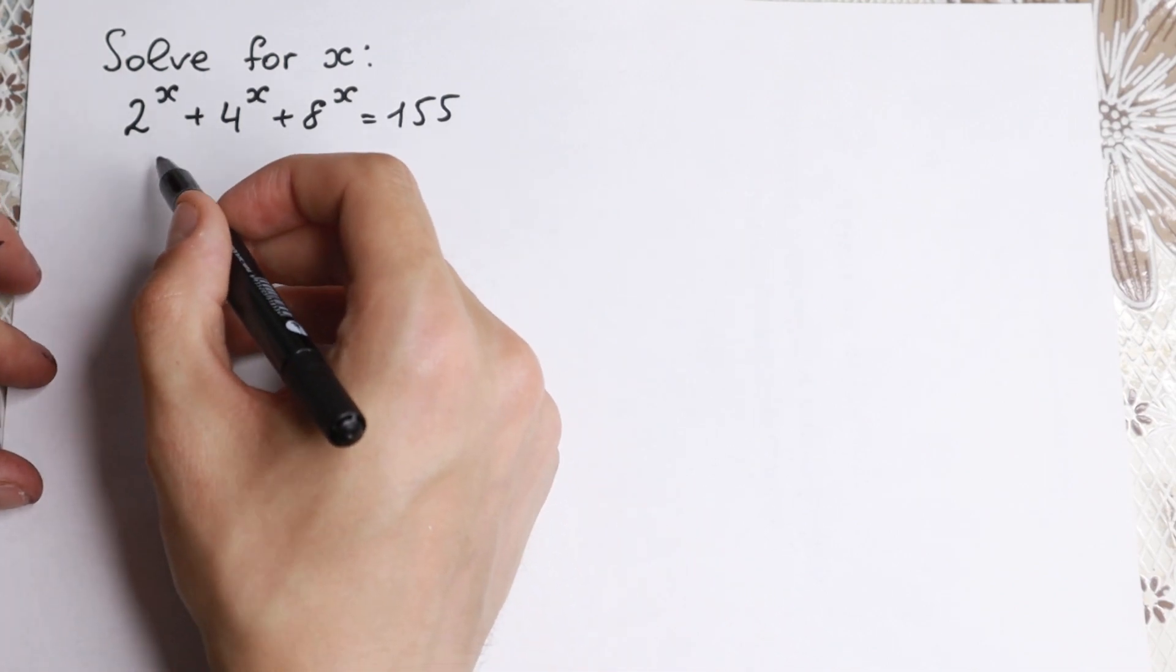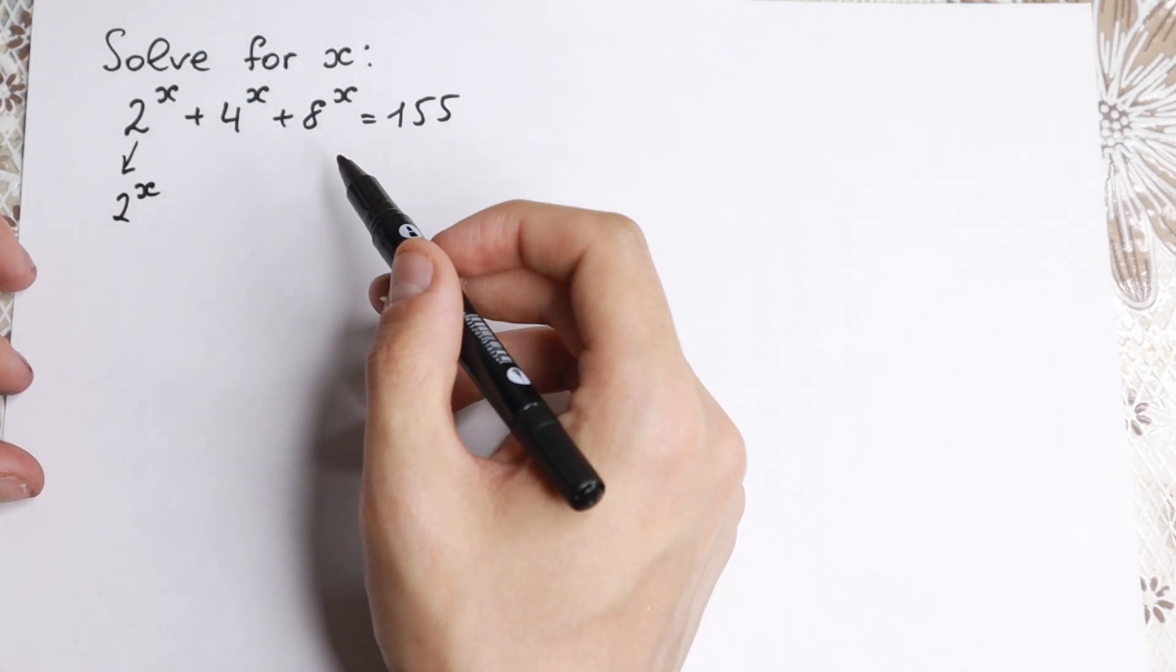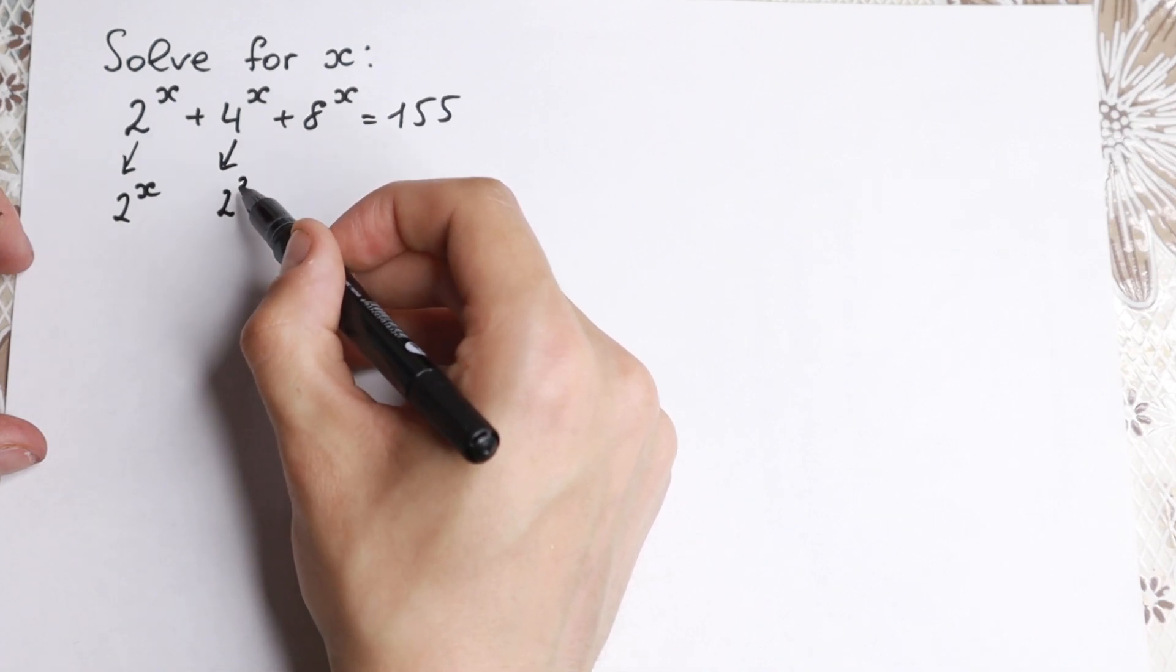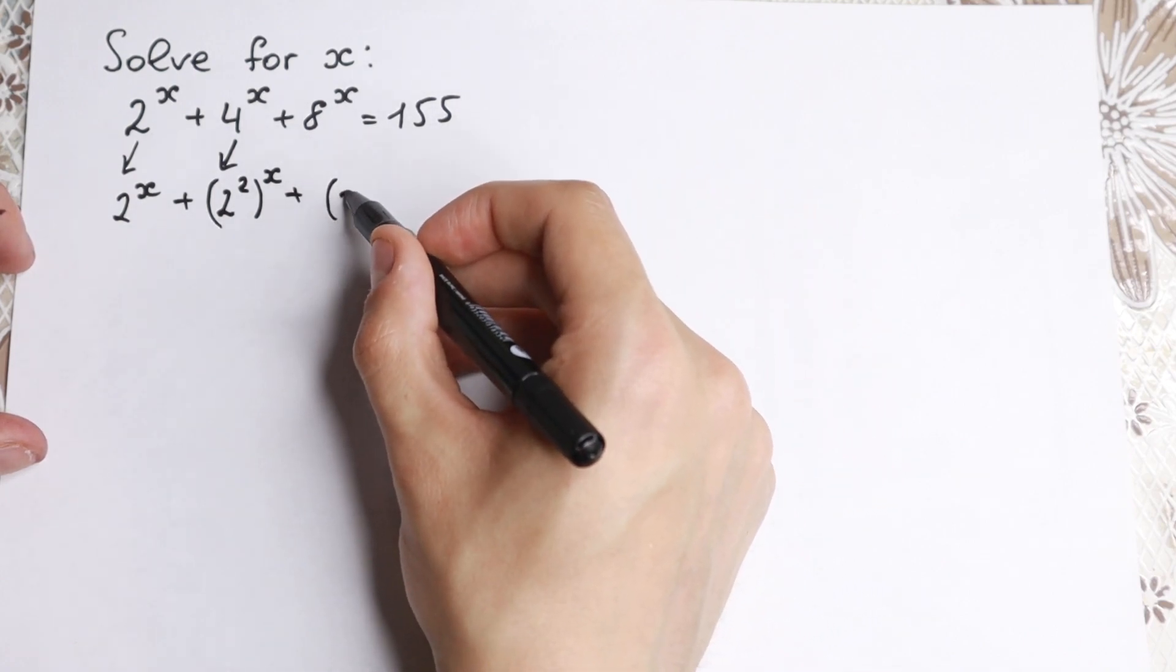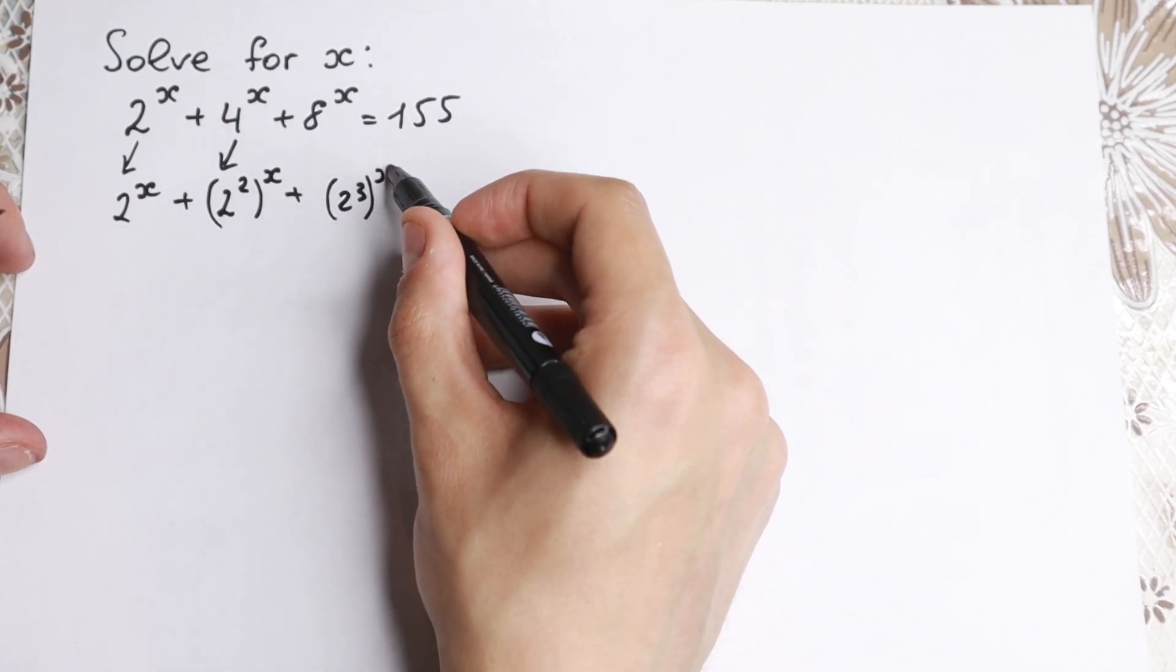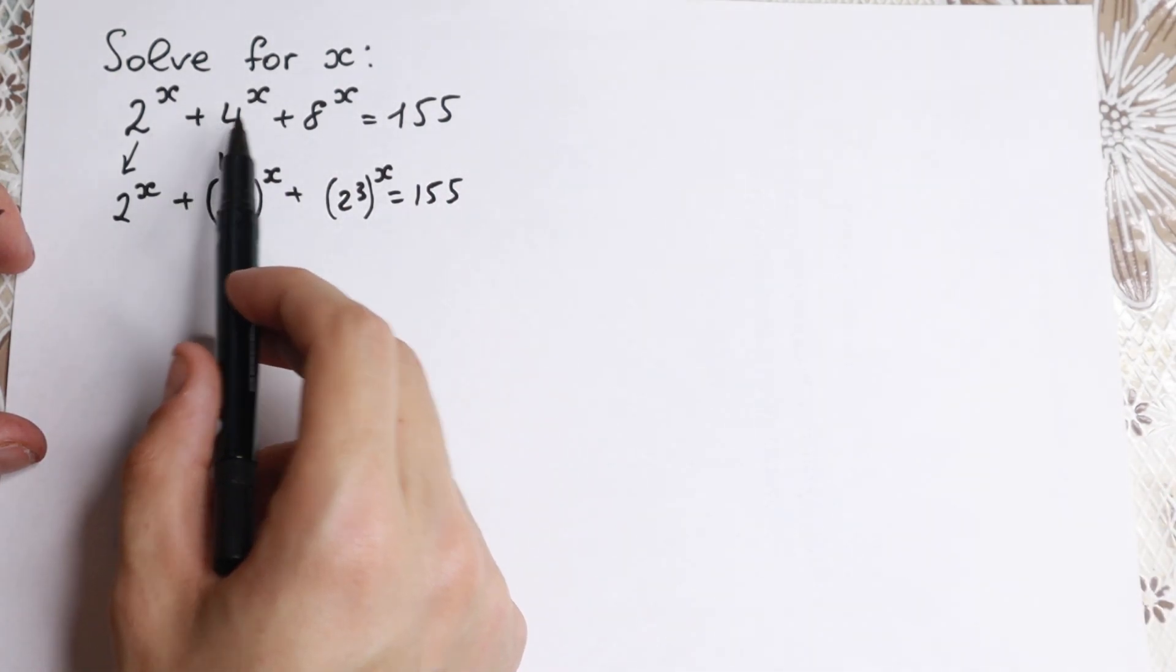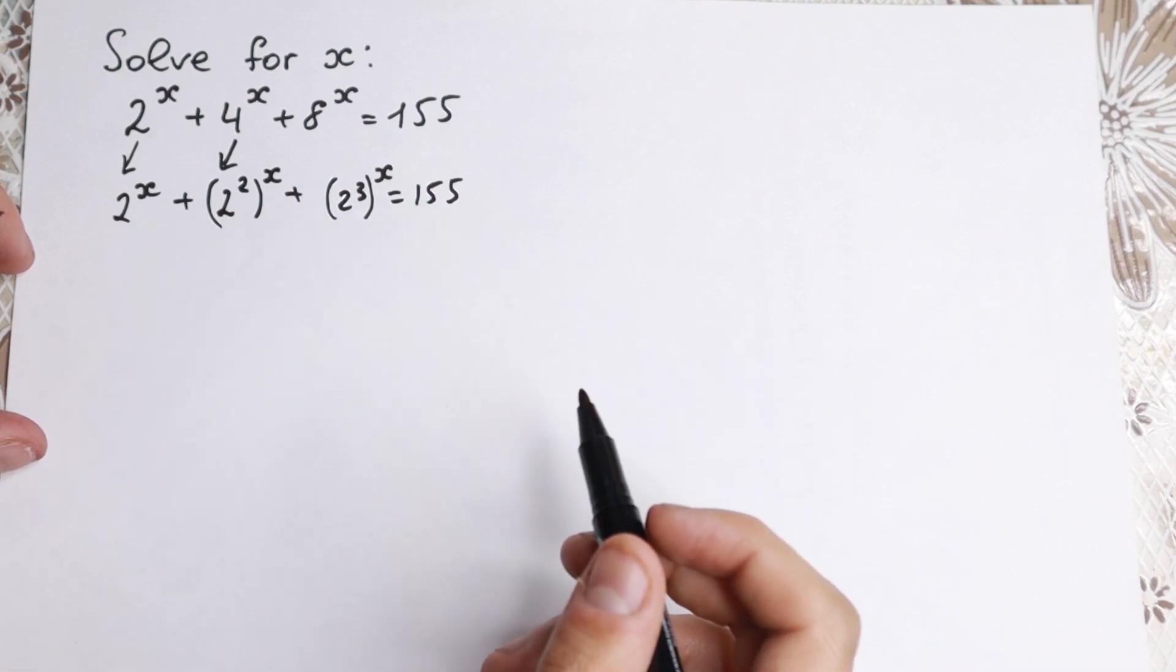Okay, we have 2 to the x, I write this 2 to the x as well right here. But this 4 to the x is really good, because we can write this 4 as 2 squared. So let's start with this 2 squared to the x, and this 8 is a really good number, because you can write it as 2 cubed to the x equal to 155. So I hope you understand this step, we just changed this 4 and 8 by 2 squared and 2 cubed.